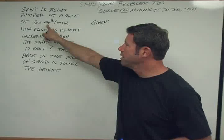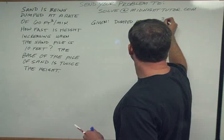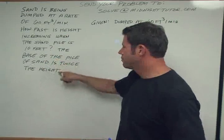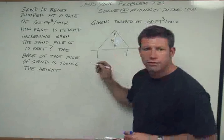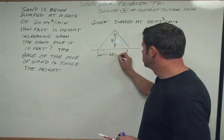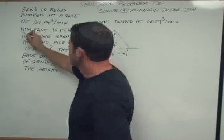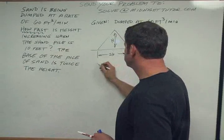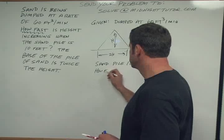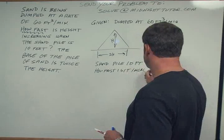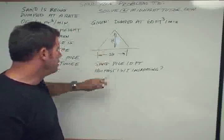And I know that we're given sand being dumped at this rate, 60 cubic feet per minute. And I know that the base of the pile is twice the height, so it's a conical pile of sand. And the base, if this is the height h, then the base here is going to be twice that. And I'm also then asked to find the answer of how fast is height increasing when the sand pile is 10 feet. So we're going to say sand pile 10 feet, and then how fast is it increasing? So this is sort of a restatement of the problem in sort of a given mentality, and then the find, which is the answer.